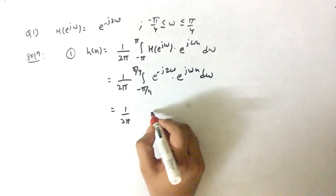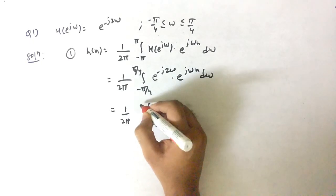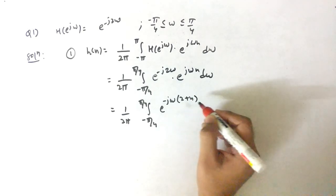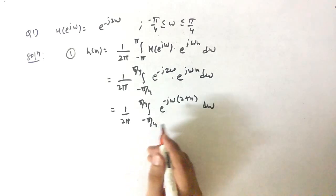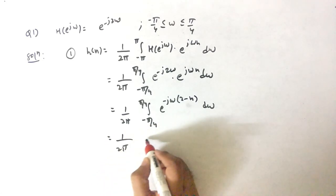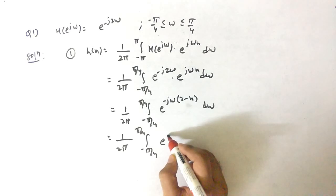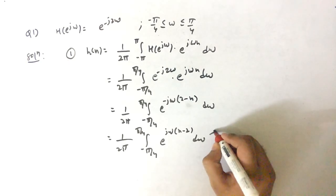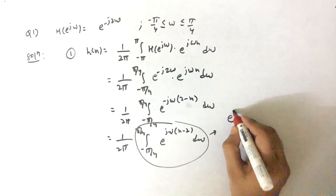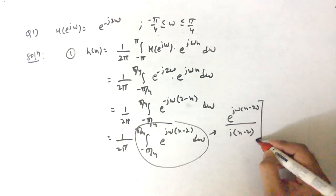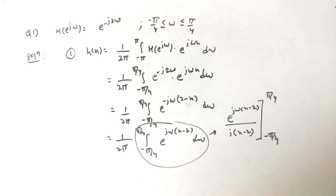We club the exponent powers together: e^(−j2ω) · e^(jωn) = e^(jω(n−2)). So we have (1/2π) ∫ from −π/4 to π/4 of e^(jω(n−2)) dω.